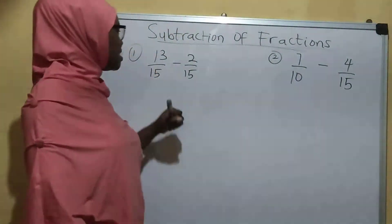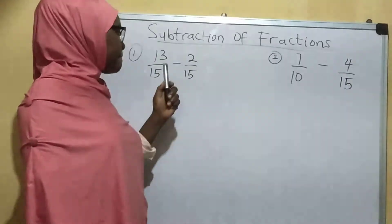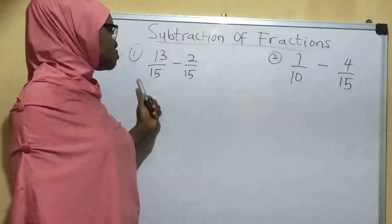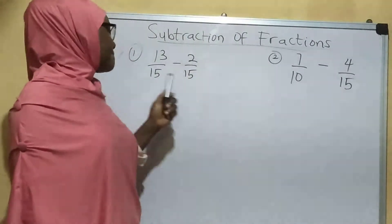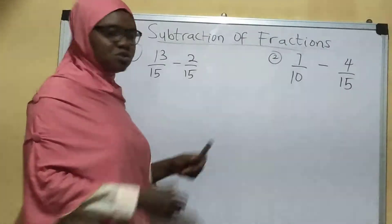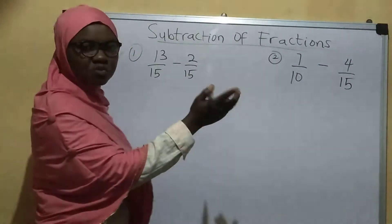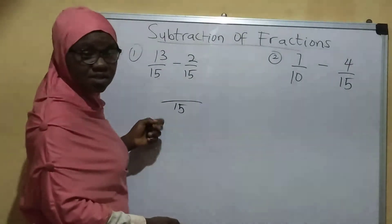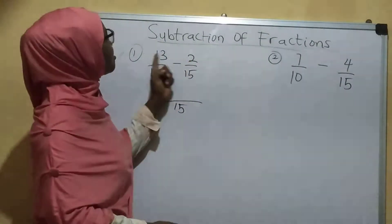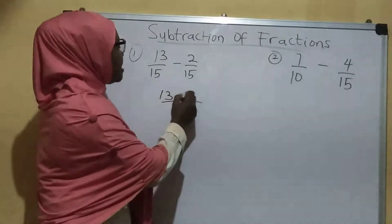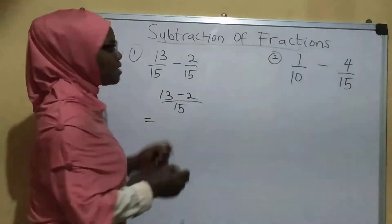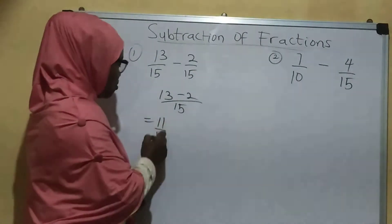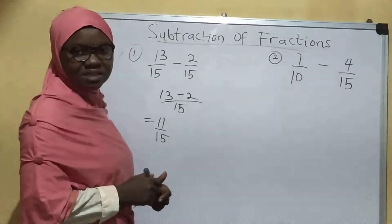So now the first question we have here is 13 over 15 minus 2 over 15. Now I want to do the subtraction — we are going to do it straight away. Why? Because they have the same denominator. We just pick one of the denominators, which is 15, to be our LCM. And after that we do our calculation: 13 minus 2 is going to be 11. That's 11 over 15. So easy, and that's our answer.